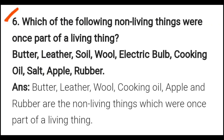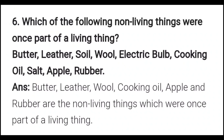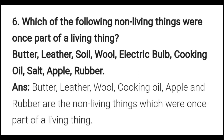Which of the following non-living things were once part of a living thing? The options are: butter, leather, soil, wool, electric bulb, cooking oil, salt, apple, rubber. Answer: butter, leather, wool, cooking oil, apple, and rubber are the non-living things which were once a part of living things.